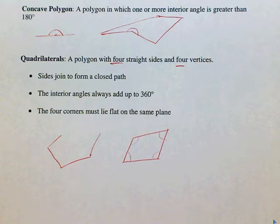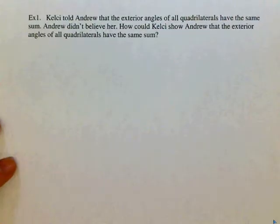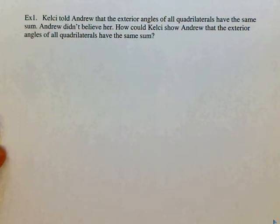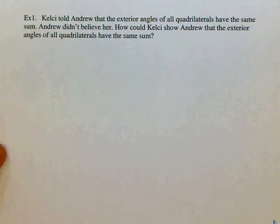Let's take a look at an example on how we can use these properties. So example one. Kelsey told Andrew that the exterior angles of a quadrilateral have the same sum. Andrew didn't believe her. How can we prove it? So the first thing we are going to do is draw a quadrilateral. Four sided, closed shape.